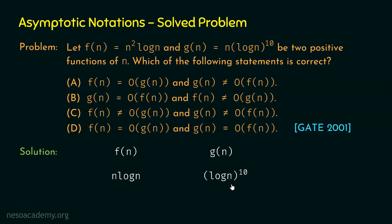The comparison is still difficult, so we simplify further. In f(n) we have log n, and in g(n) we also have log n, so log n is common in both. Removing log n from both: f(n) becomes n, and g(n) becomes (log n)^9 — previously it was (log n)^10, now it is (log n)^9 because we removed one log n. So after simplification, f(n) = n and g(n) = (log n)^9.